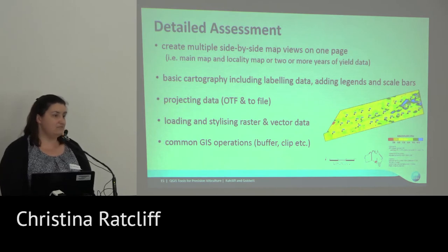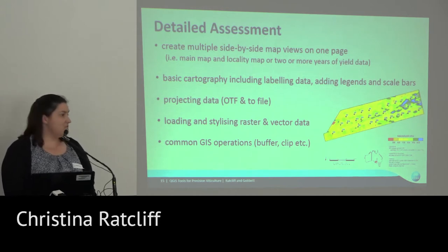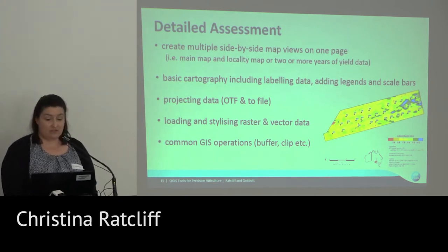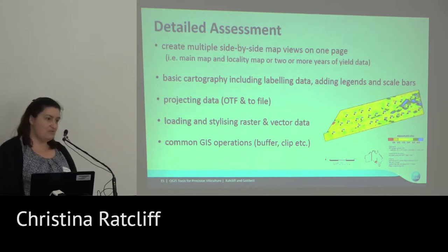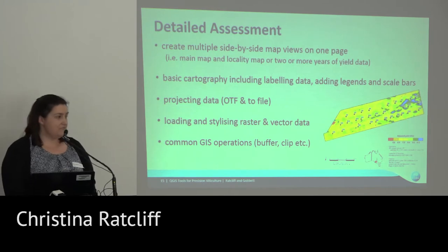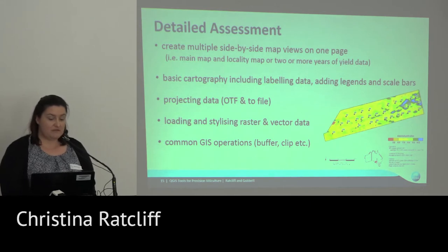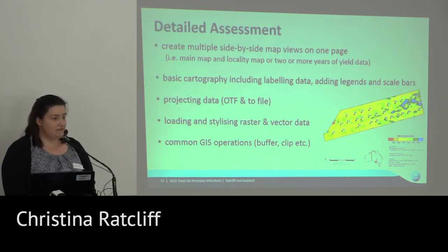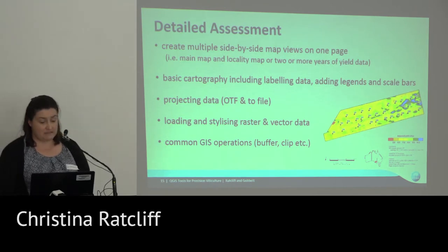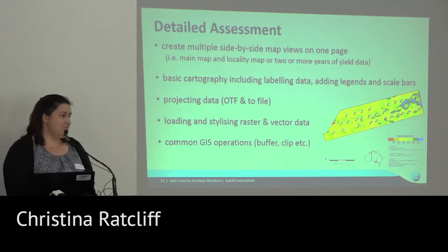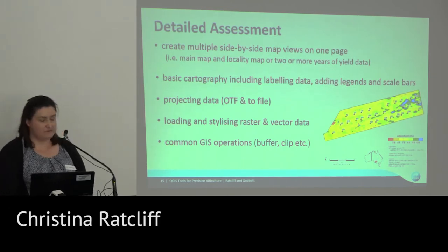The testing workflows included things like being able to produce maps with multiple side-by-side panels — two different yields, imagery, elevation, or a simple location map showing where we are in Australia. We had to have basic cartography including labelling, legends, scale bars, text boxes, titles, and logos. Projecting data — some datasets come from all over Australia, so converting between different GDA zones was important. Being able to stylise data based on our protocols — they're very strict on the colours used — so we needed custom colour ramps. And in addition, all the general GIS operations like buffering and clipping.